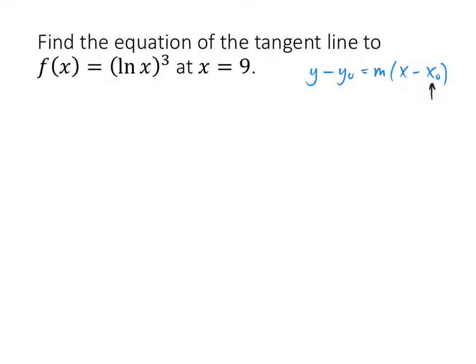Well, x₀ is the easy one because that's the value of x that they give us, which is 9. y₀ is a little bit less easy, but not too bad, because that's just f of 9. That's just the y value when x is 9, which is going to be the strange-looking number natural log of 9 cubed.